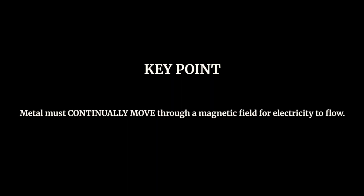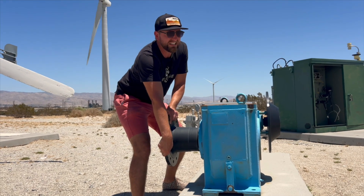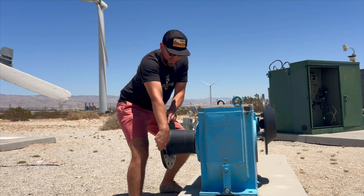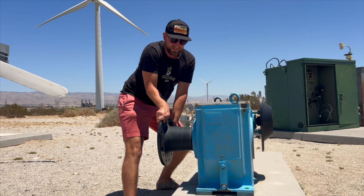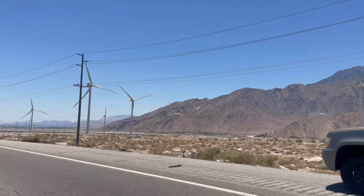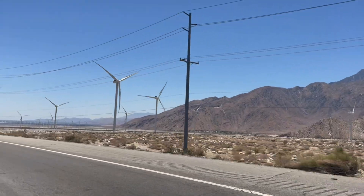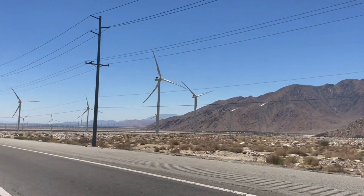You'll notice that electrical current only flows while the generator is spinning in my hand. As soon as I stop actively turning it, the electrons no longer flow. So in order to keep people's refrigerators running, we need to keep the generators spinning. And the bigger the generator, the more energy it will take to do this.